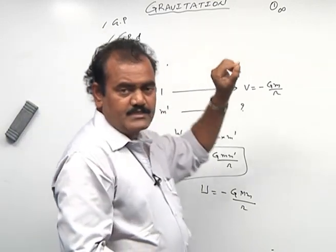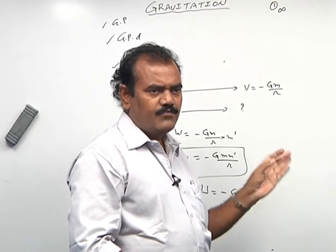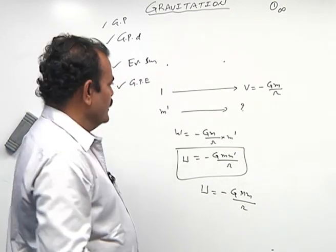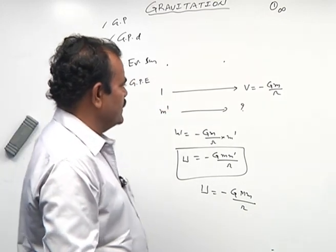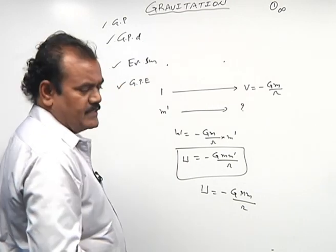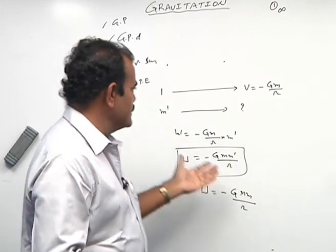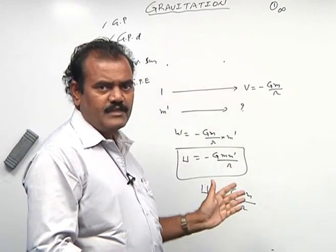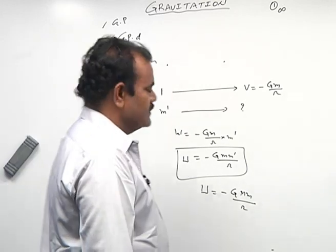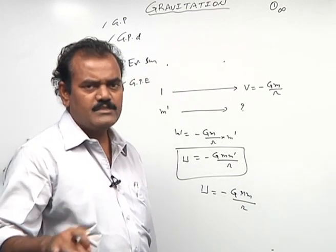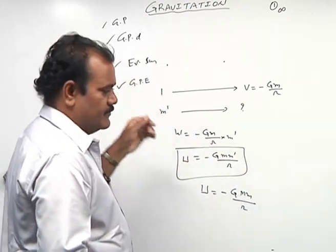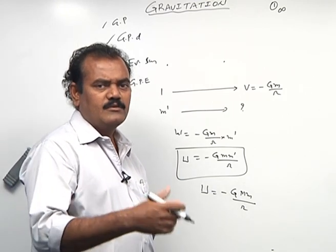Once again coming to the summary: first, gravitational potential is the burden in bringing unit mass from infinity to a point in the gravitational field - formula is -GM/r, and maximum value is zero at infinity. Second, gravitational potential difference is the burden in bringing unit mass from one point to another in a gravitational field. Third, equipotential surface is the locus of all points having the same potential - examples are a sphere or the Earth's surface.